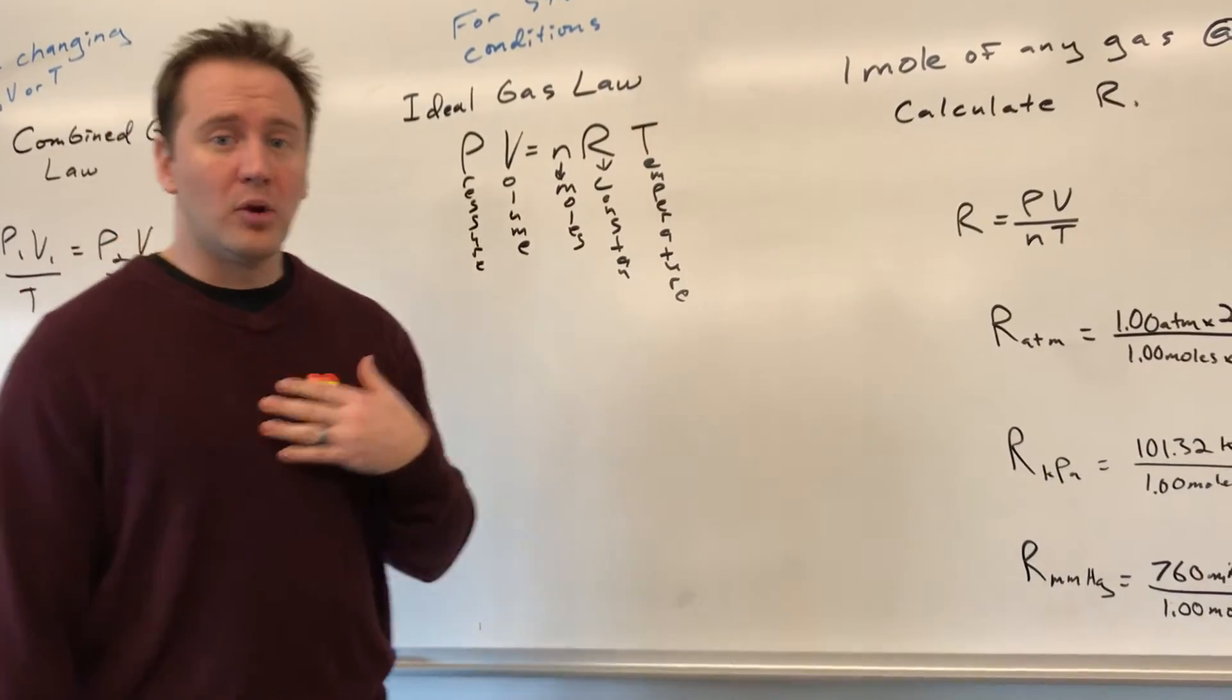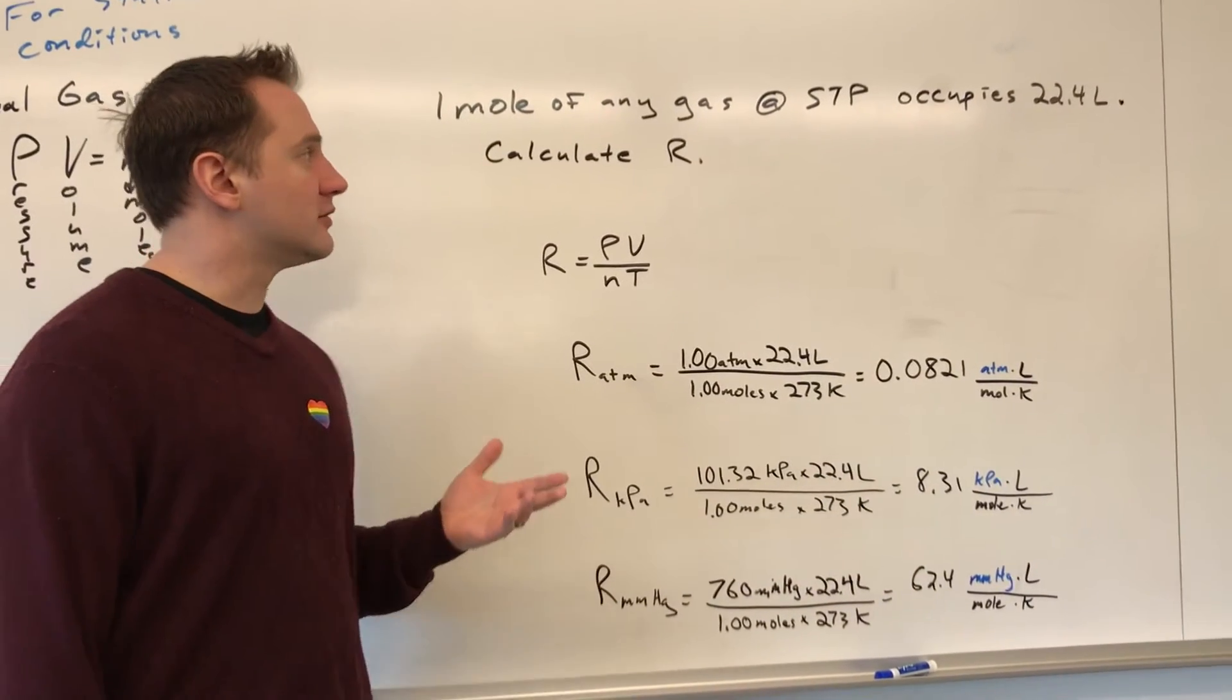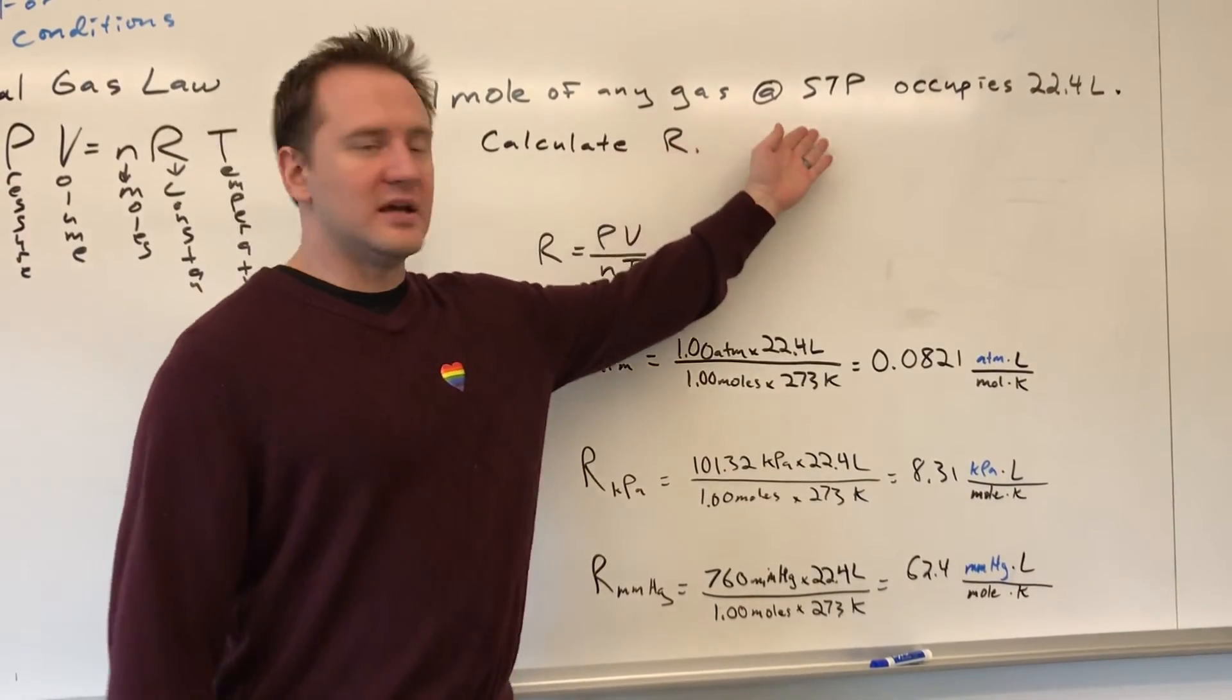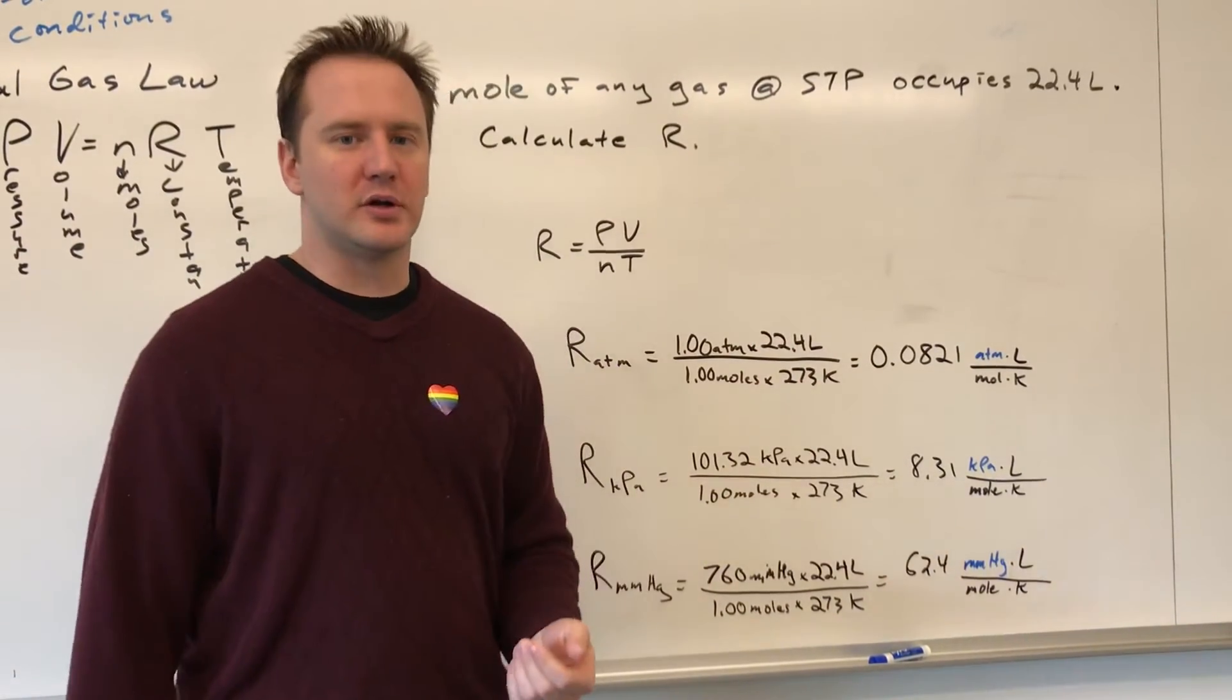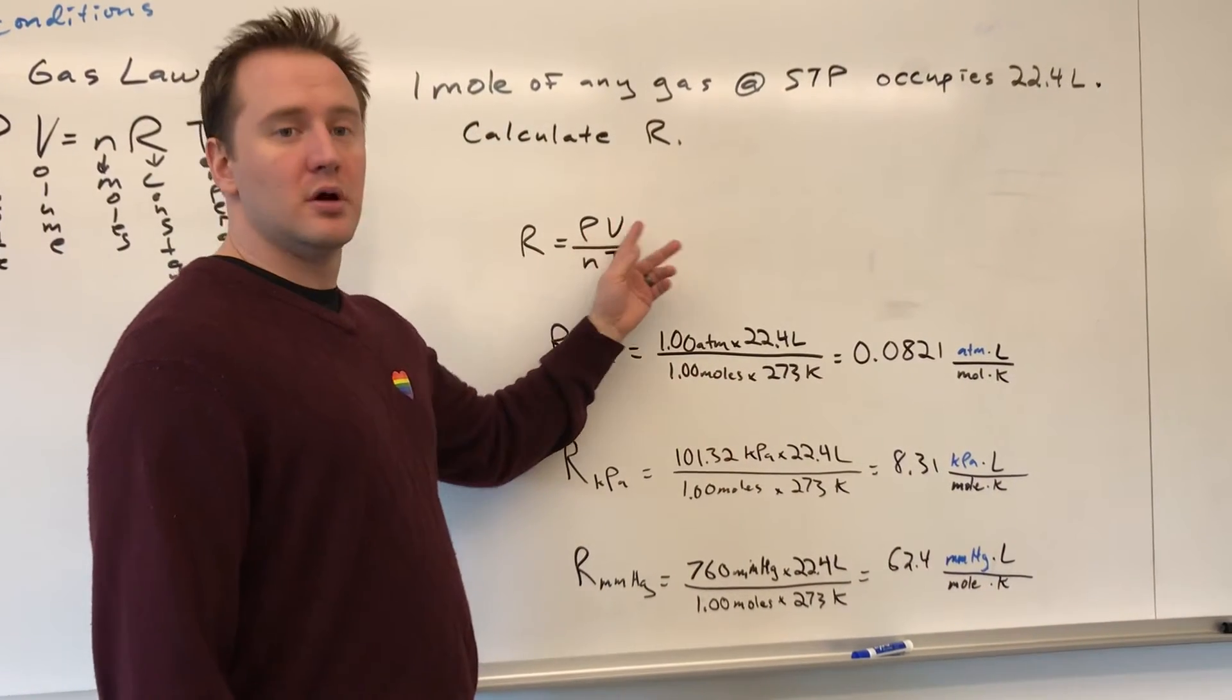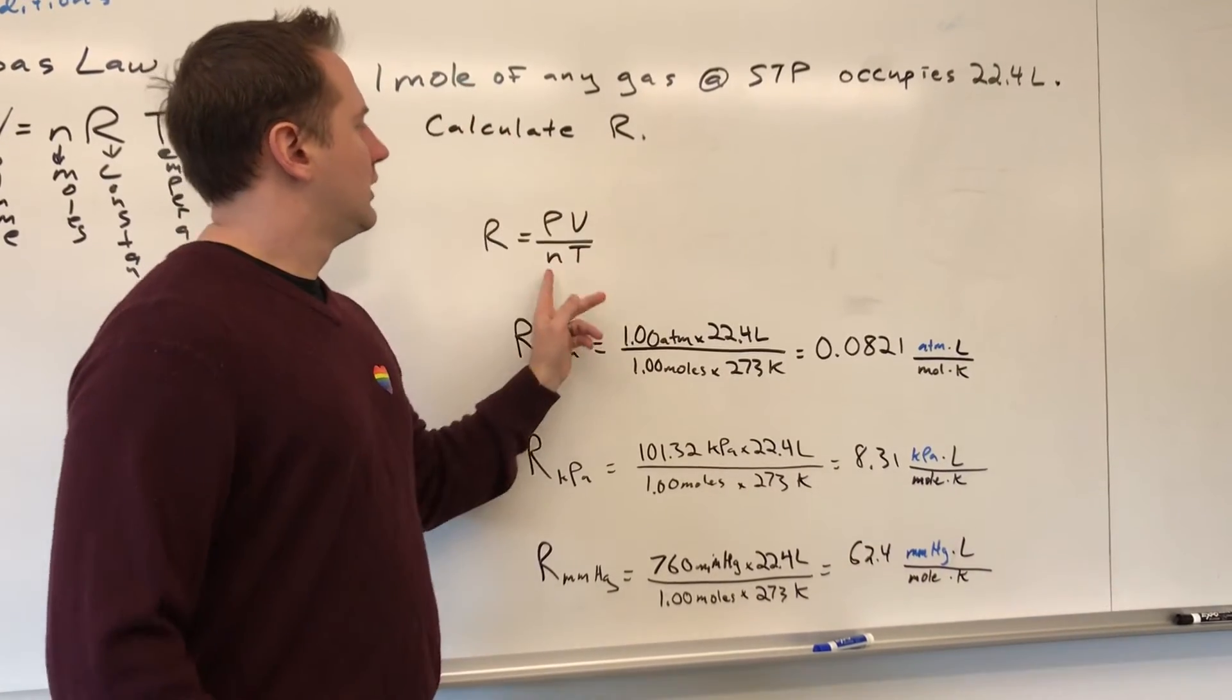So, knowing that one mole of any gas at STP occupies 22.4 liters, we can calculate R from that. So, if we say that standard temperature is 273 Kelvin, and say standard pressure is one atmosphere, given those pieces of information, we have a pressure, a volume, and we're going to assume one mole of any gas, and a temperature.